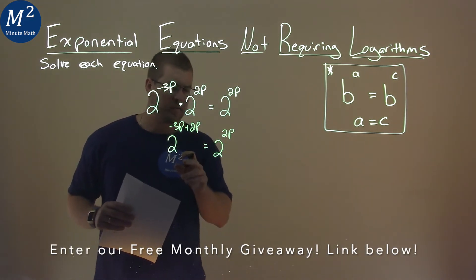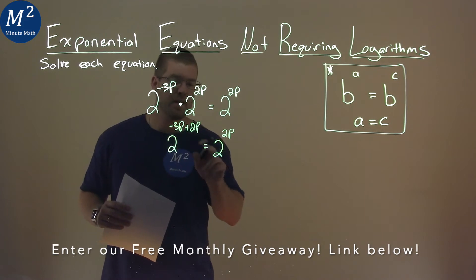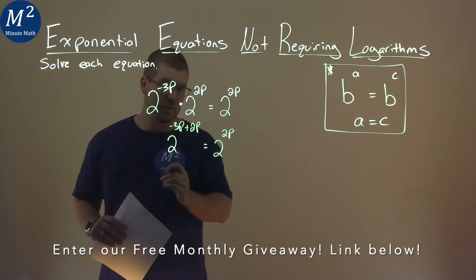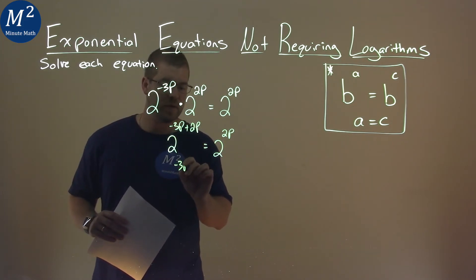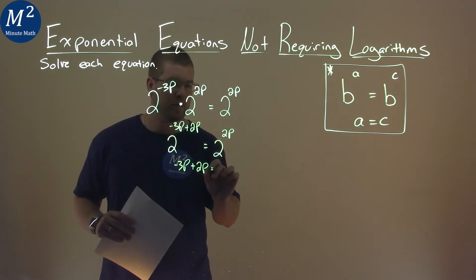Now they also tell us when we have the same base on either side of the equal sign, we can just set the exponents equal to each other. So negative 3p plus 2p is equal to 2p.